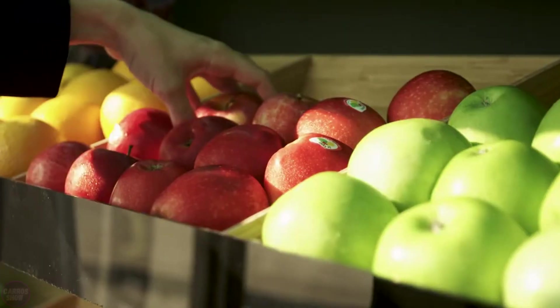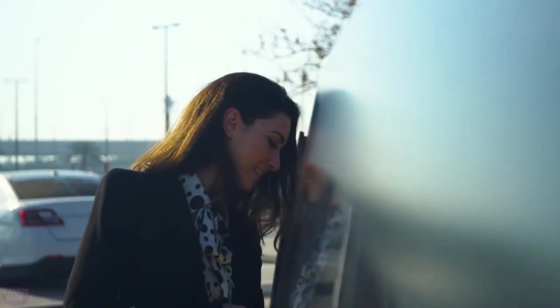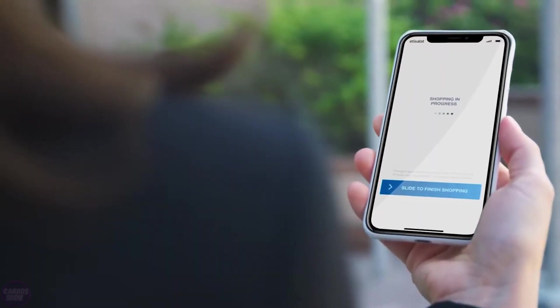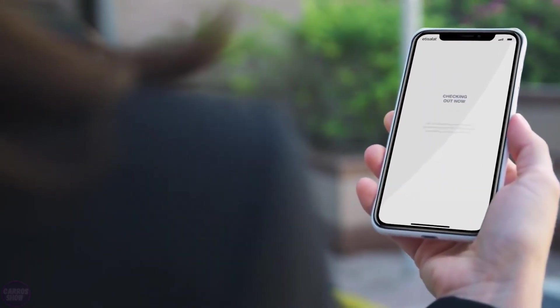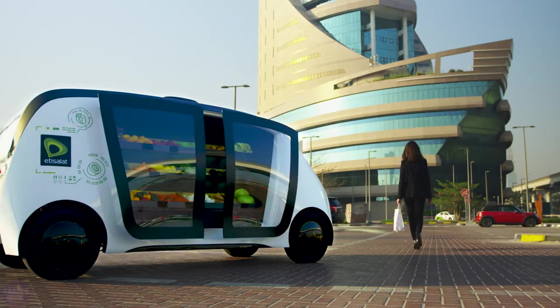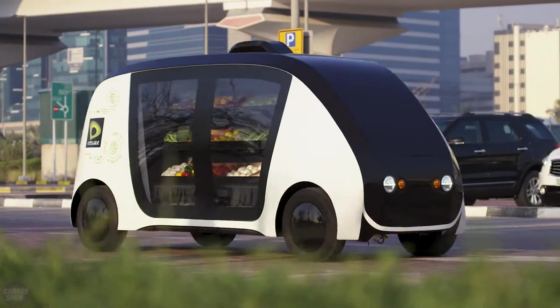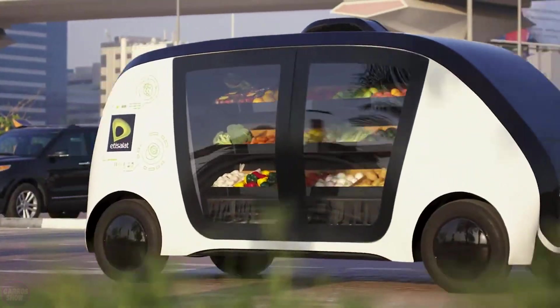The Robomart concept addresses this issue as follows. The customer simply needs to press a button in the mobile app to summon the nearest van to their home, similar to Uber Eats. Upon arrival at the specified address, the customer opens the doors of the mobile store using the same application, selects the desired products, and notifies the system when the shopping is complete. The Robomart van is a fully autonomous vehicle without a driver's seat, allowing the entire internal volume to be used for products.